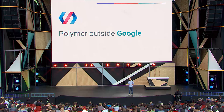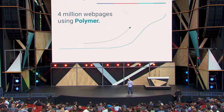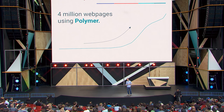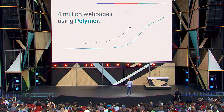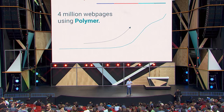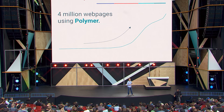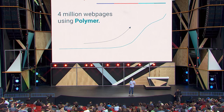Not only that, Polymer is being used outside of Google by companies big and small. In fact, Polymer adoption in the wild has quietly skyrocketed. There are over 4 million web pages now using Polymer on the open web. And many large companies are investing heavily in Polymer and web components for the future of their front-end stacks.